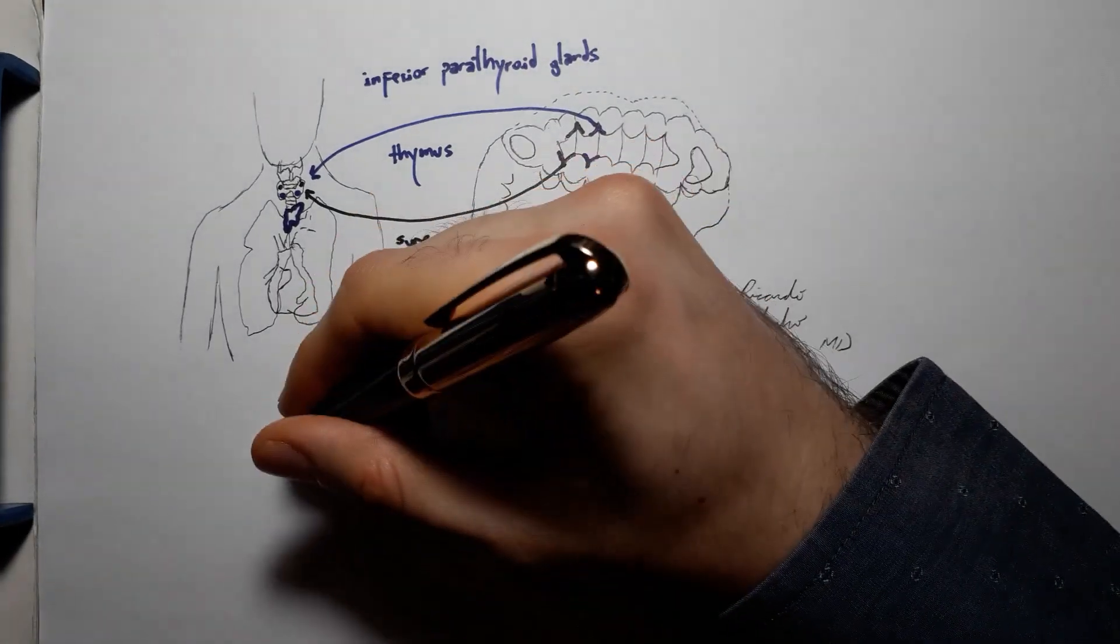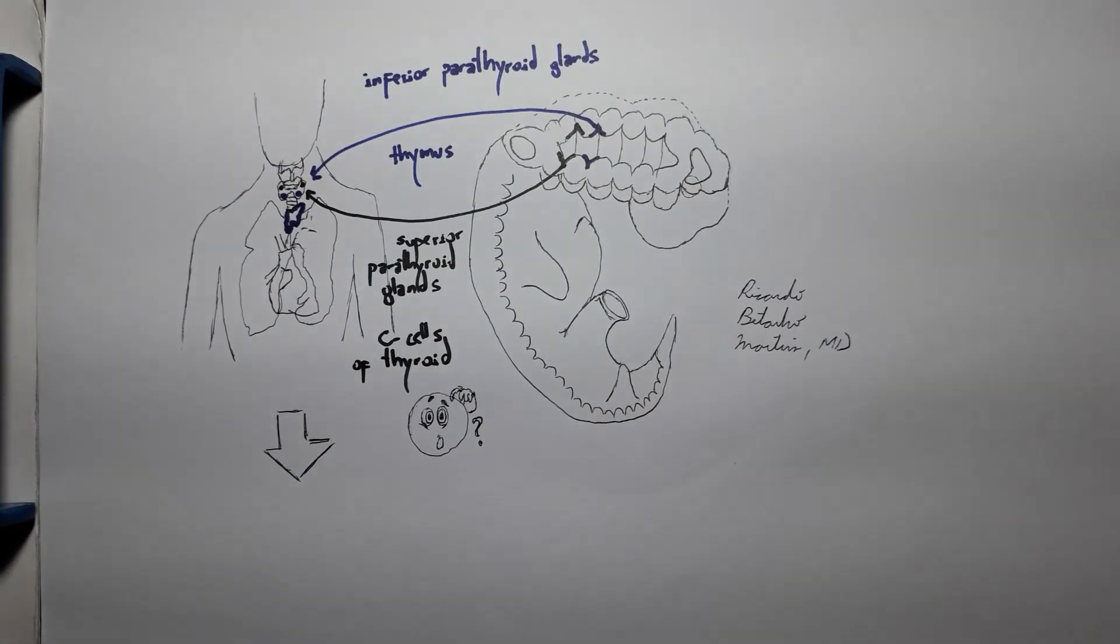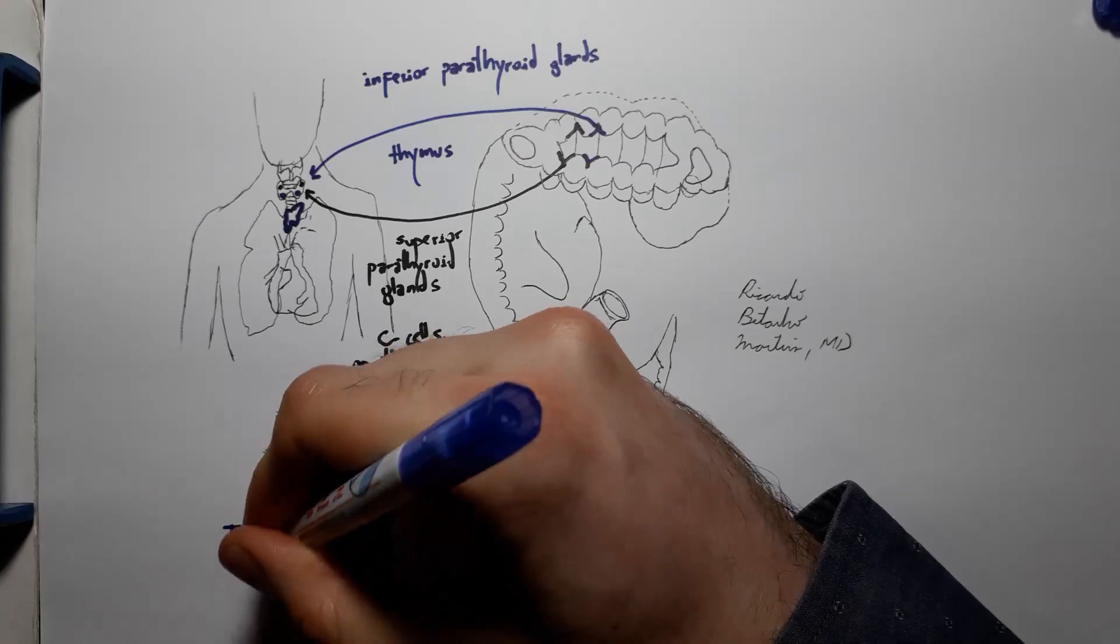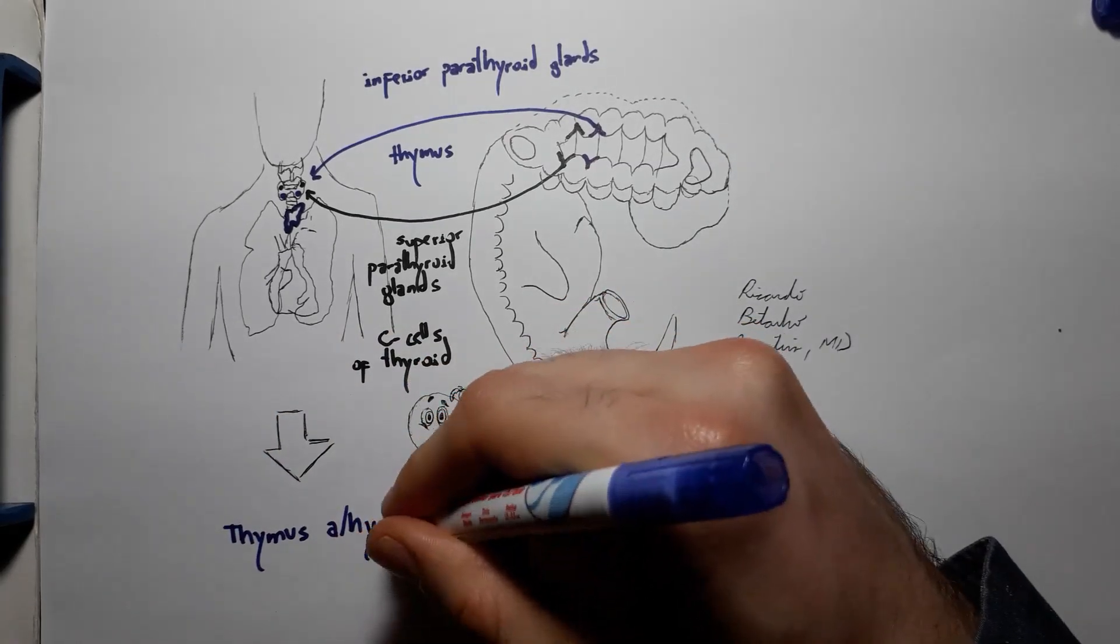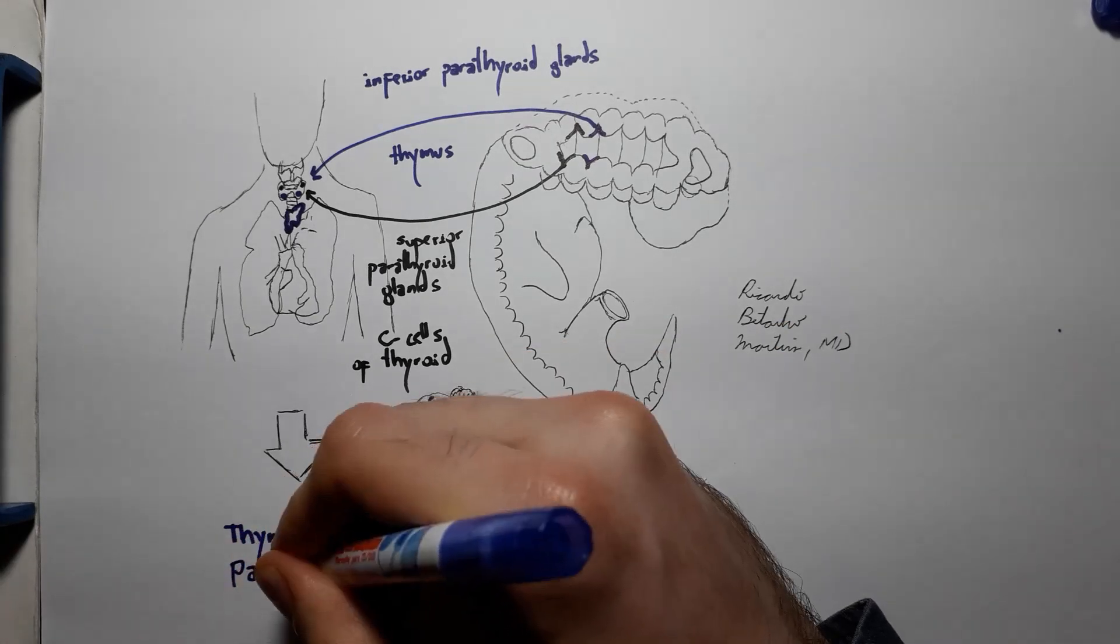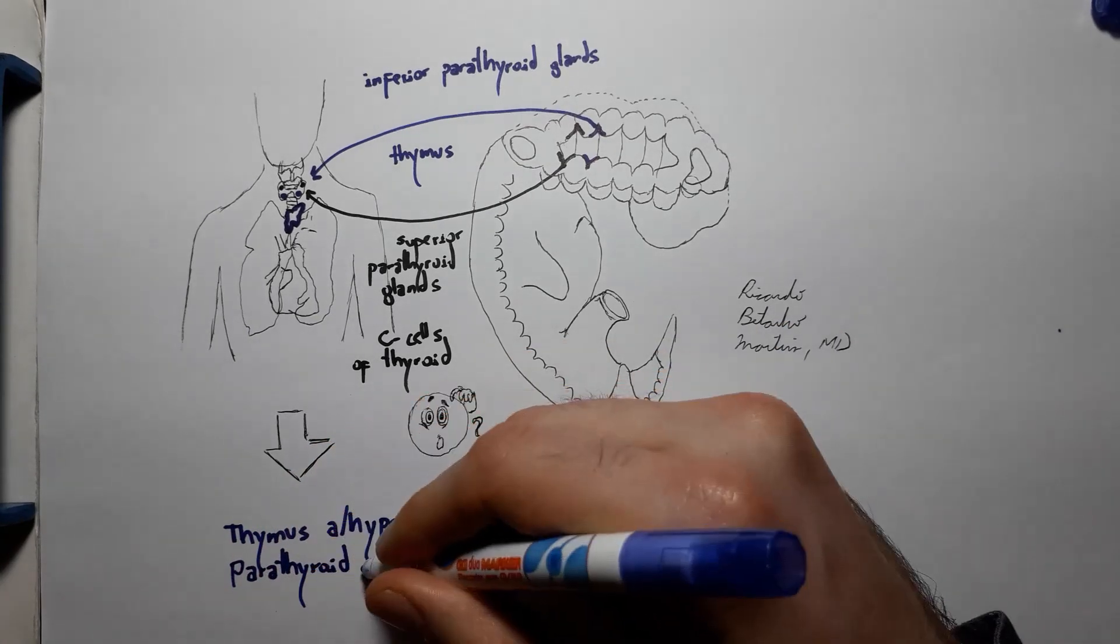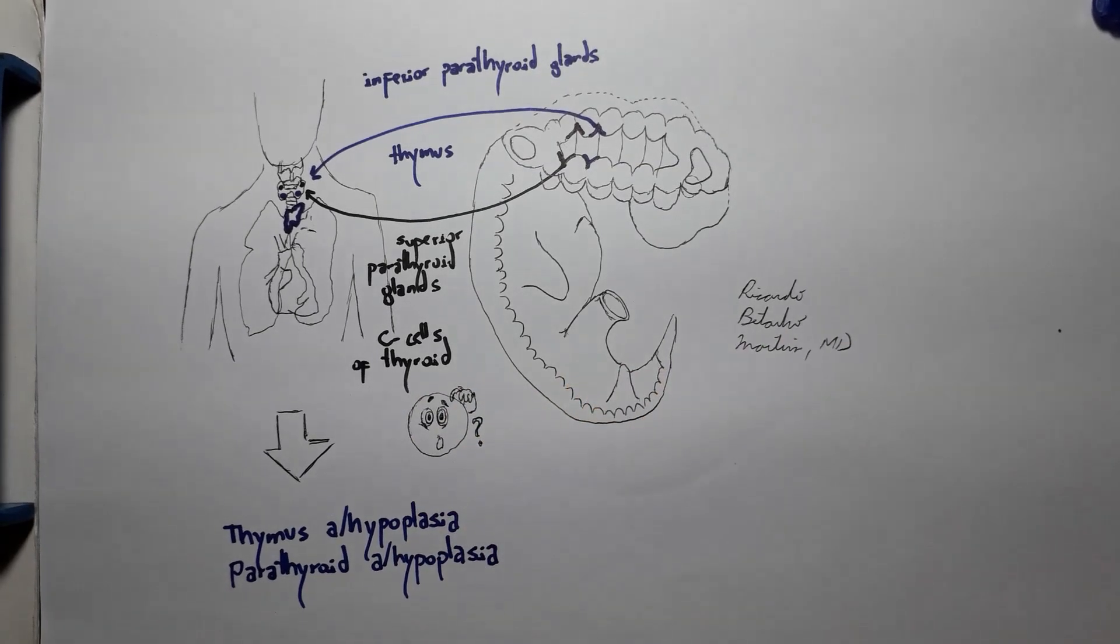A bit counterintuitively, the superior parathyroid glands come from the inferior pharyngeal pouch, the fourth. In the end, what really matters is that if we can't adequately develop pharyngeal pouches 3 and 4, we won't get a thymus or parathyroids, or we'll get deficient versions of these organs. So we'll present with thymus aplasia or hypoplasia and parathyroids aplasia or hypoplasia.